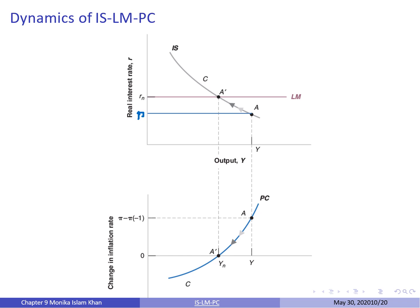The adjustment process and medium run equilibrium are shown in the following graphs. Let the initial equilibrium be point A in both the top and bottom graphs. The central bank increases the policy rate over time, so the economy moves along the IS curve from point A to point A prime, and output decreases. As output decreases, the economy moves down the PC curve from A to A prime. At point A prime, the policy rate equals Rn, output equals Yn, and inflation is constant — the change in inflation rate equals zero. This is the medium run equilibrium.